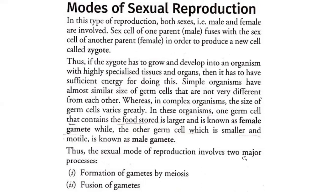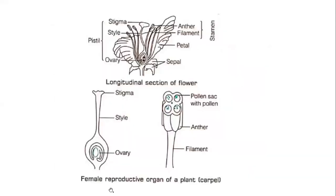Reproduction needs two major steps: formation of gametes by meiosis and fusion of gametes. So these are the main processes involved here.